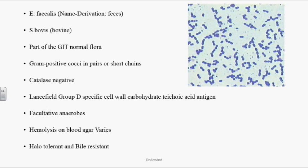Combined together, these two organisms can be referred to as Group D Streptococcus organisms. They are always seen inside the GI tract — they are normal flora of the GI tract. They are Gram-positive cocci in pairs or in chains, resembling Streptococcus pneumoniae on Gram-stain smears. They are catalase-negative.